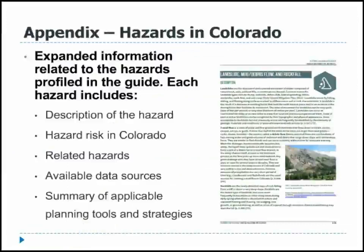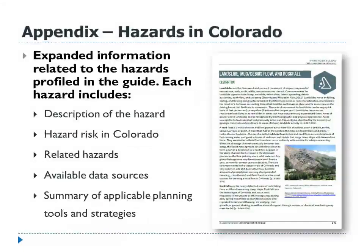We tried to select language from communities that provide a broad range of examples — a county in the southwest, a big city, a small town, a resort county — to ensure the model language would be fairly broadly applicable. The appendix talks about the hazards in Colorado; each hazard has a description, risk level in Colorado, how that hazard may be interrelated with other hazards. It tries to point communities to available data sources and allows you to see which planning tools and strategies are applicable to that hazard.